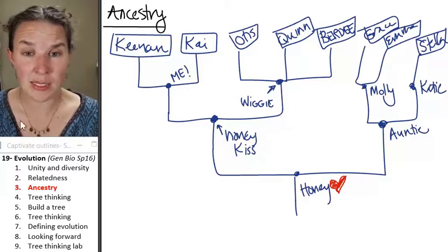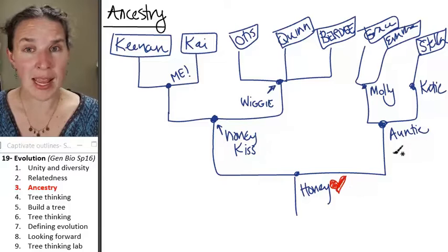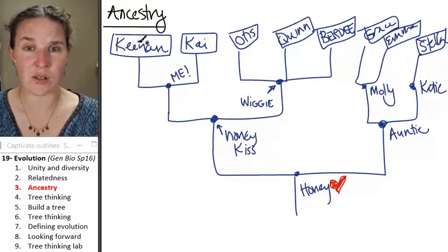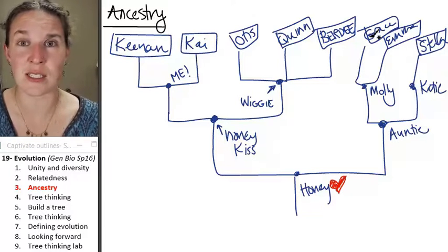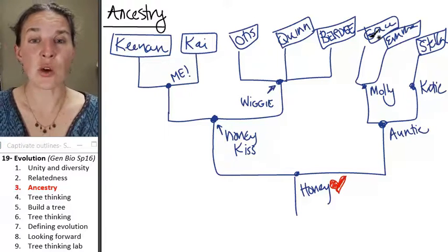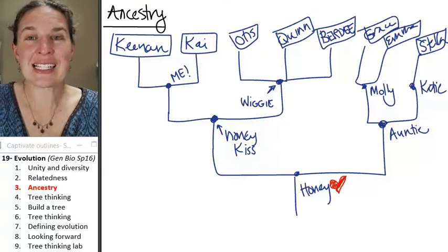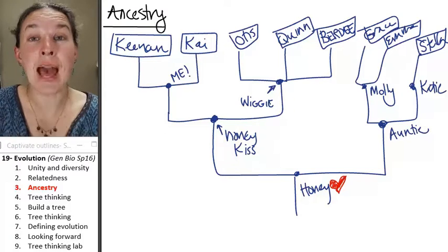But my Honeykiss, I mean, my mom and my auntie, they're still here, and all these clowns are still here, and those crazy goofies are definitely still here. And so this is an example of how we can map relatedness.